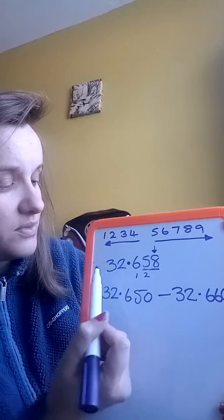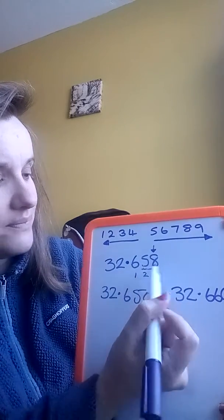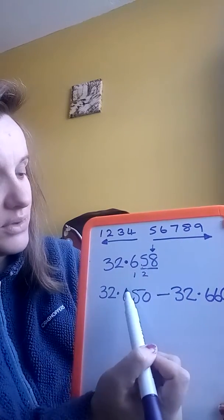So what we're looking at is, we've got the 32.658, we're looking at our number eight. So does that eight make it round up or does it make it round down?